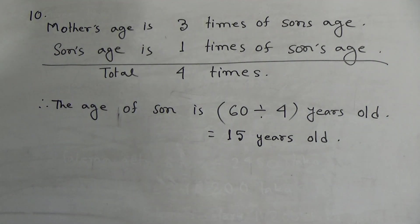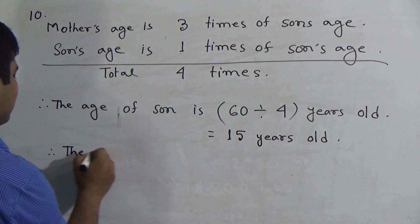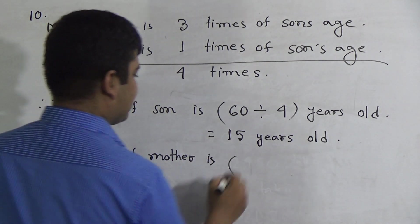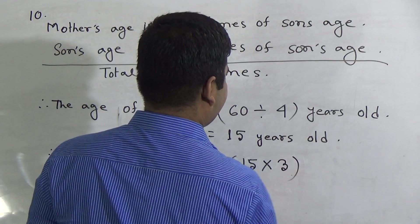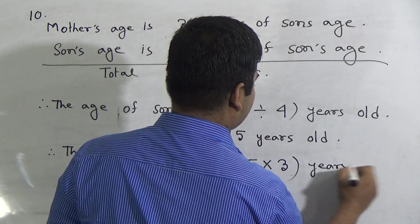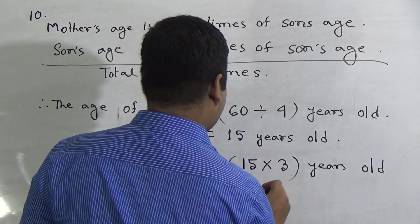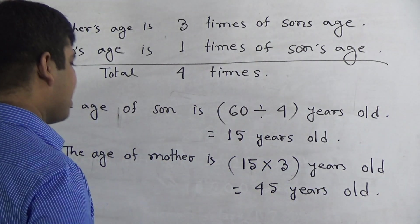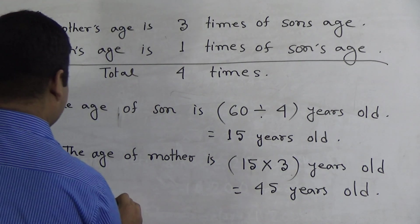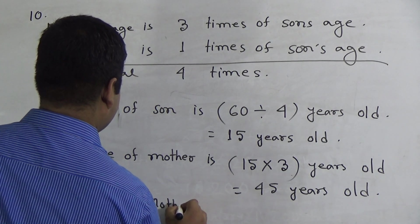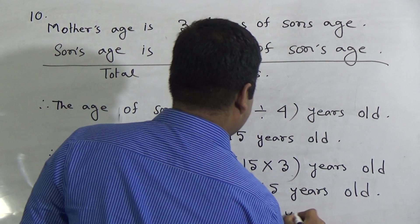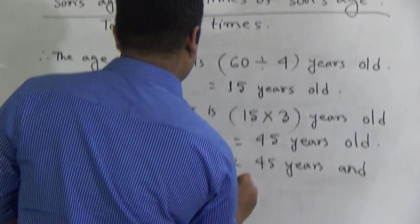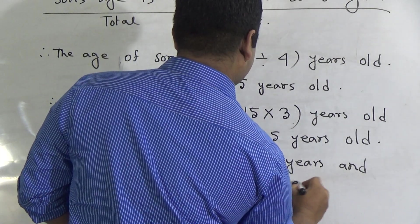Next we find out the age of mother. So write here, the age of mother is 15 multiply by 3 years old, which equals 45. Then the answer: Mother is 45 years old and son is 15 years.